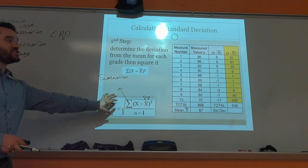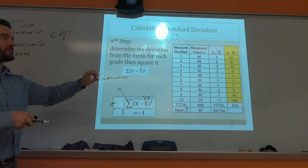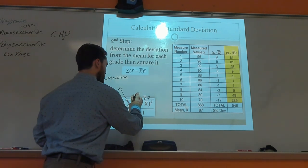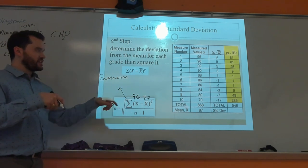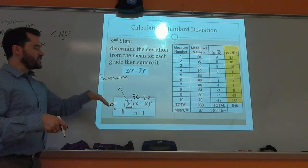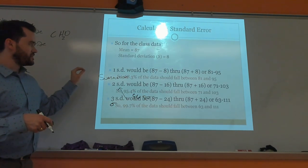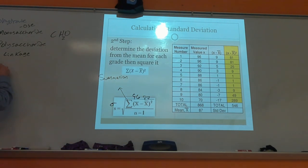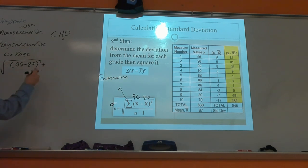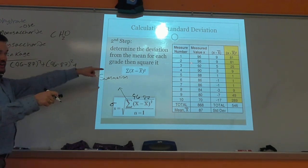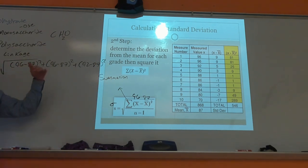What you do is take all of these scores. Summation means take all your individual values — so x for the first number is 96. You do 96 minus your average of 87, then square it, which gives you 81. Then you do the same for the next value: 96 minus 87 squared, plus 92 minus 87 squared, and so on for all individual measured values.